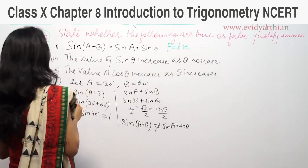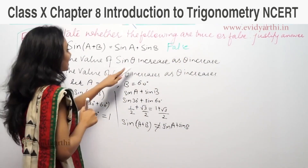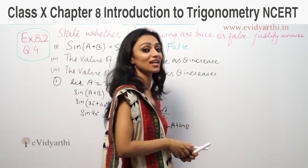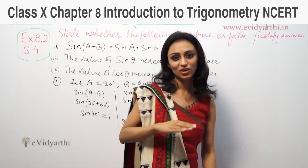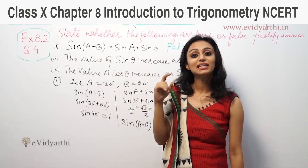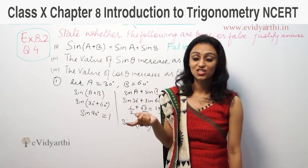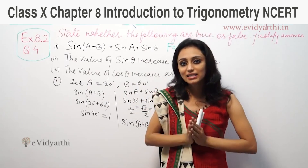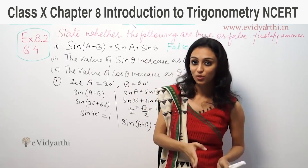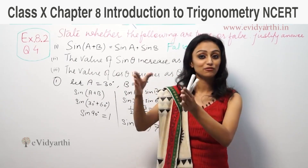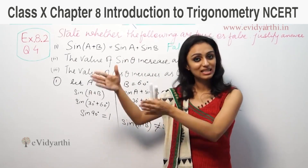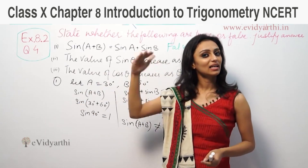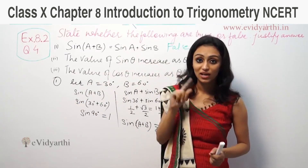Now, the value of sinθ increases as θ increases. Our angle starts to increase: 0, 30, 45, 60, 90. Just like our angle increases, what happens to the value?